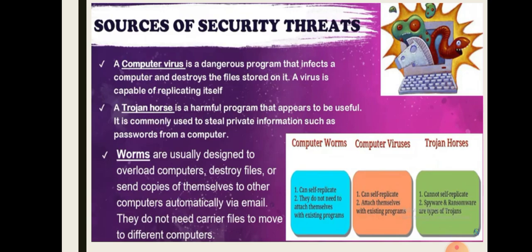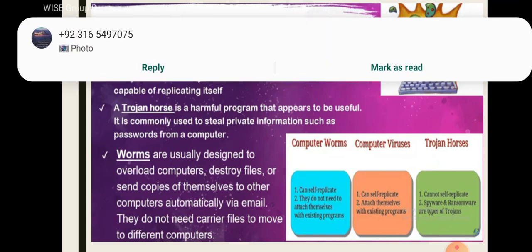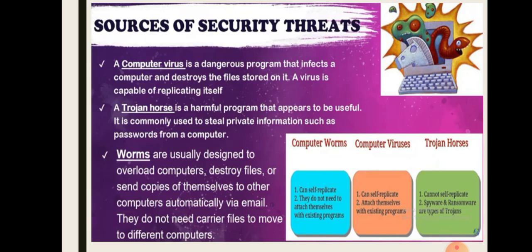The third one is worms. Worms normally use a computer network to move to different computers. A key difference between a worm and a virus is that viruses normally attach to a file and corrupt it — they attach to a carrier file. But worms create copies of themselves that are transmitted over a computer network. The Morris Worm was one of the first computer worms to be distributed via the internet. Please underline that — it's on page number 100.